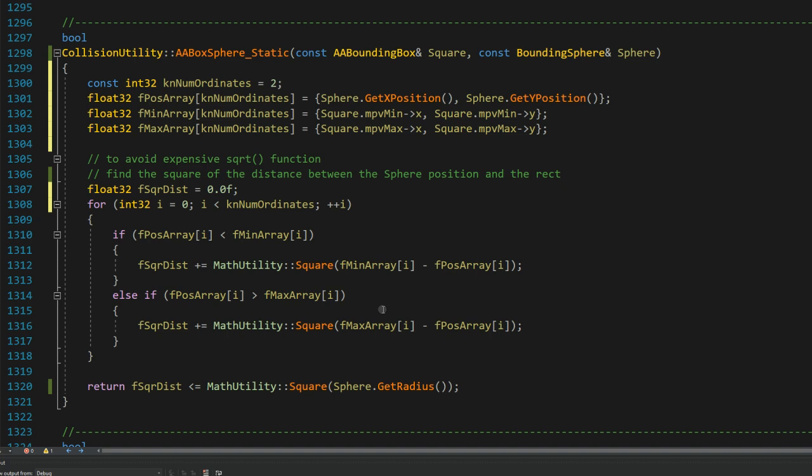After we have totaled all the square distances, we check if it is less than or equal to the square of the radius.